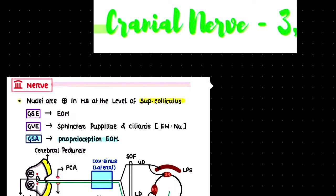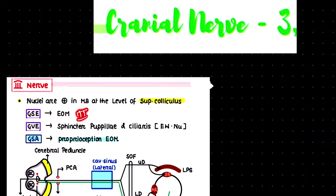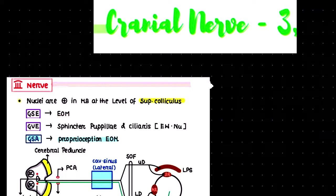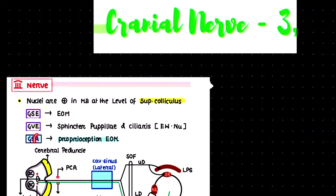General somatic efferent fibers were supplying the extraocular muscles. Every extraocular muscle was supplied by this third cranial nerve except the superior oblique and lateral rectus. In GVE, they were supplying smooth muscle and some glands, running parallel with the Edinger-Westphal nucleus. In the GSE efferent column, they were also responsible for proprioception of extraocular muscles.